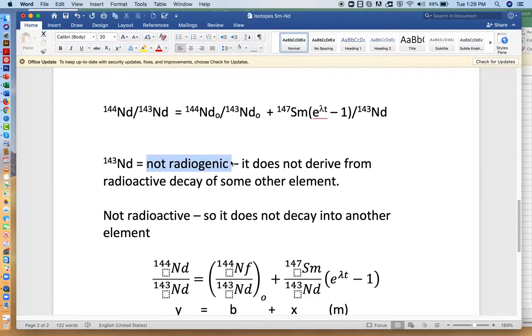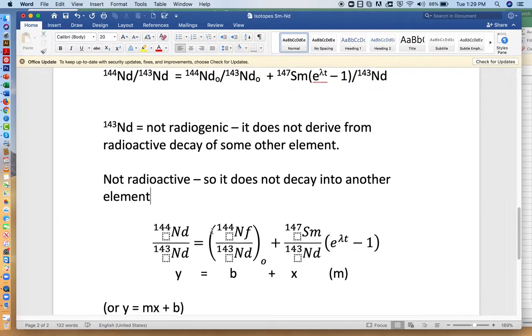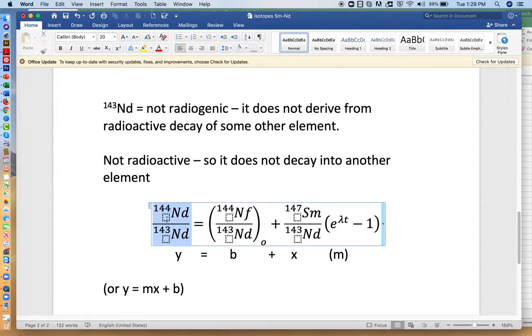And like strontium 86, neodymium 143 is not radiogenic, and it is not radioactive. So it's not going to change with time. So it won't affect any of our time calculations. But it's easier to measure ratios than absolute abundances. And that's one of the reasons why we do it.